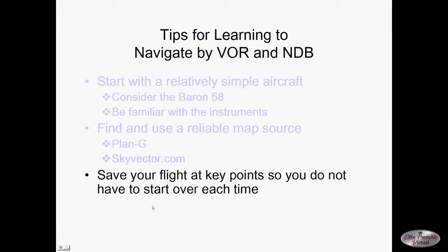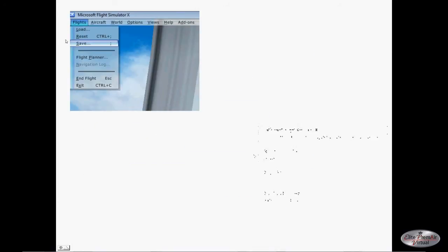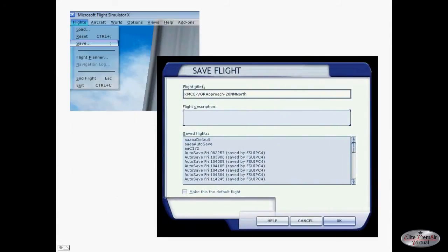Another thing to consider is saving your flight at key points so you don't have to start over every time — very handy when practicing approaches. From paused mode, click on Flights, then Save, and a dialog box allows you to save that flight in that position. For example, 'Merced VOR approach, 20 miles north' — something descriptive so you know what it is. There are also applications like FSU IPC that will autosave every 2 or 3 minutes, keeping up to 10 recordings, so you can back yourself up about 15 minutes and fly the same route again.